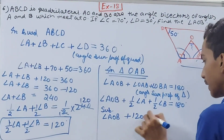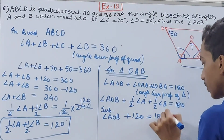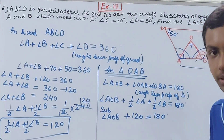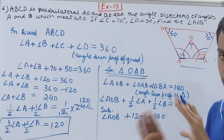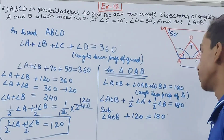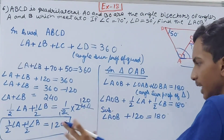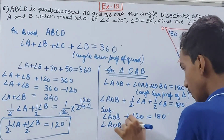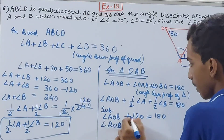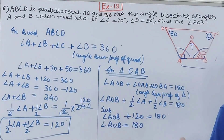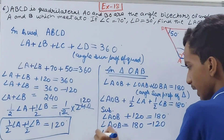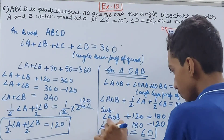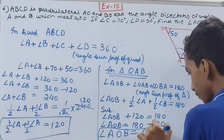We already know that half angle A plus half angle B equals 120 degrees. Substituting: angle AOB plus 120 equals 180. Therefore, angle AOB equals 180 minus 120, which is 60 degrees.